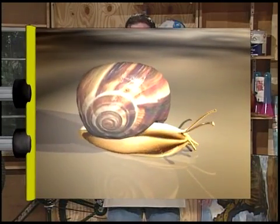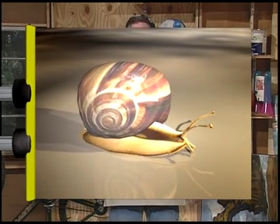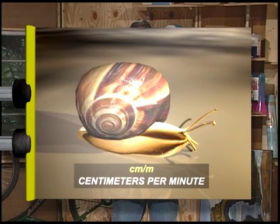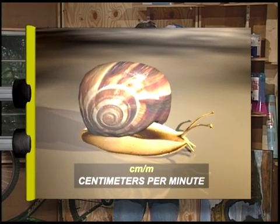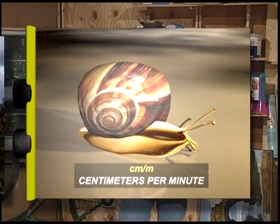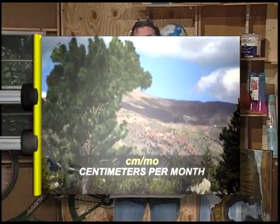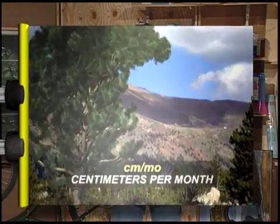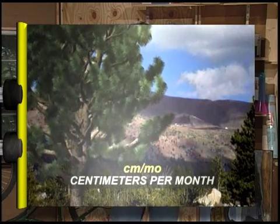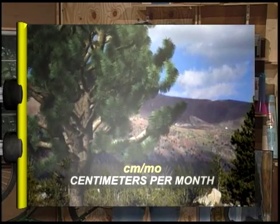Measures of speed are chosen to make the most sense of whatever they're trying to describe. It probably wouldn't make much sense to choose miles per hour to measure the speed a snail moves. But maybe a different measure of distance and time, like centimeters and minutes, would help us understand better just how quickly it moves. How about the speed at which a tree grows? Maybe inches or centimeters per month or per year, depending upon the type of tree and how quickly it normally grows.